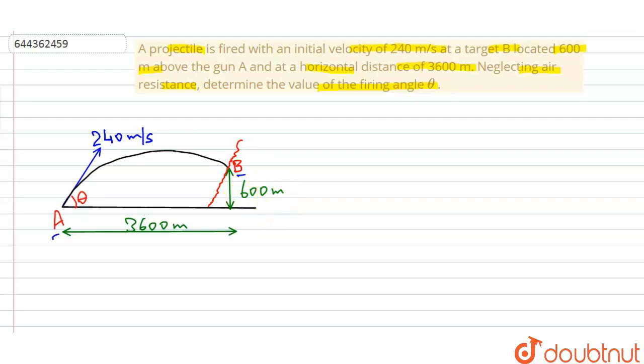The vertical distance Y is given here, equals 600 meters, and the horizontal distance X equals 3600 meters.